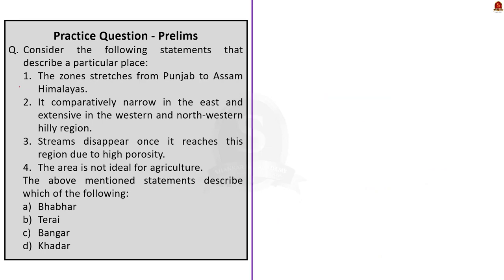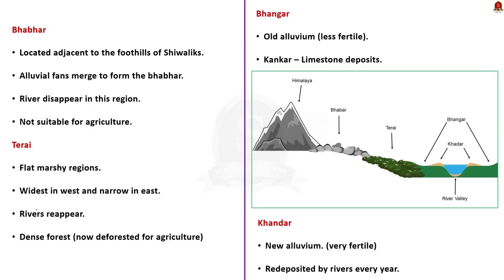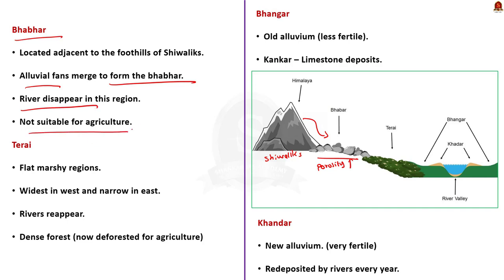The next question gives four statements describing a particular place. All four statements represent the Bhabar region, so the correct answer is option A. Bhabar is located adjacent to the foothills of Shivaliks. Rivers descending from the Himalayas deposit their load along the foothills in the form of alluvial fans, which have merged together to build up the Bhabar belt. One unique feature is its high porosity, due to which rivers disappear in this region. This high porosity also makes the region not suitable for agriculture.